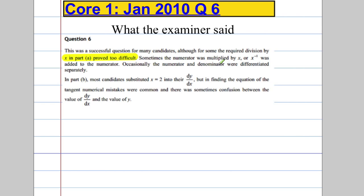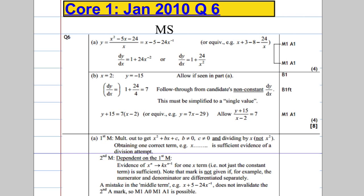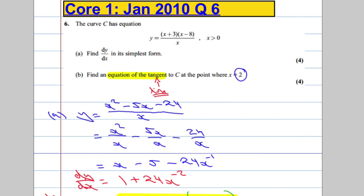Occasionally, the numerator and denominator were differentiated separately. Strange move there. Anything other important that I can see? Finding the equation of the tangent, numerical mistakes were common. Guys, I know it's a non-calculator paper, but be careful. Don't make those numerical and arithmetic mistakes. And sometimes confusion between the value of dy dx and the value of y. So, obviously, some people were substituting the x value back in and didn't know how to get the y value.